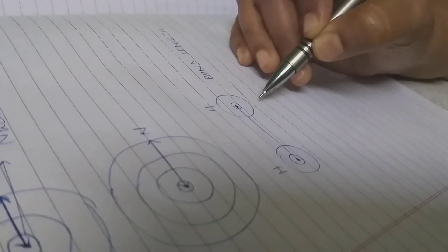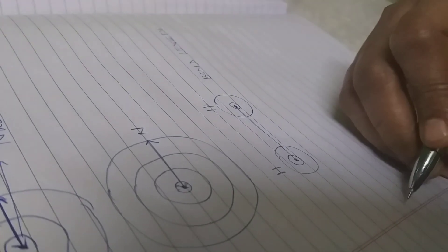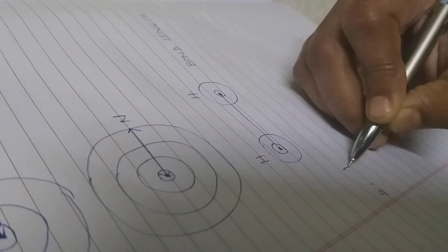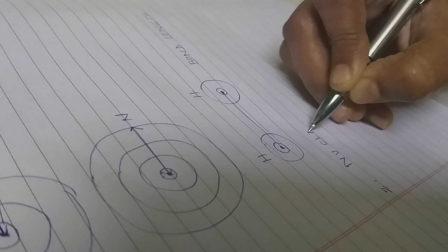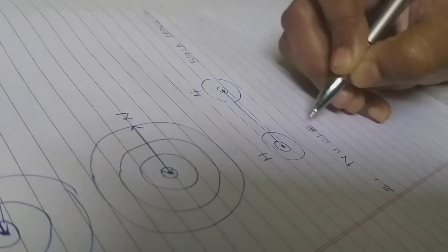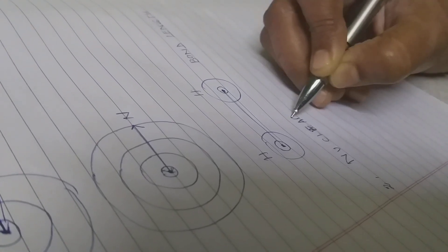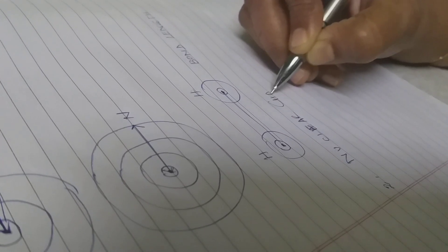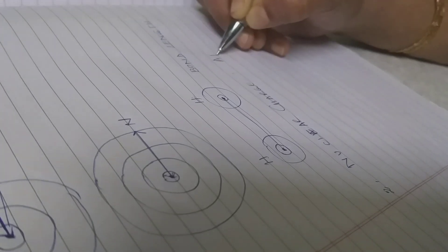The second important factor is the nuclear charge. Now nuclear charge, as you know, is very easy. Nuclear charge means actually the atomic number of the element.